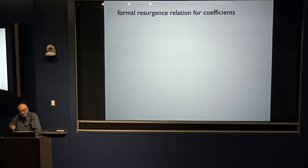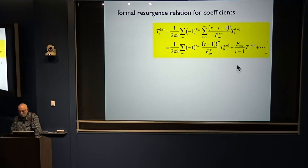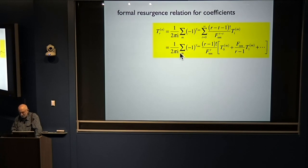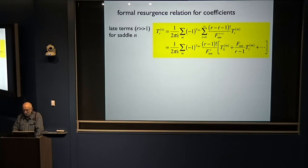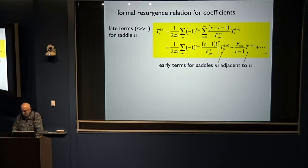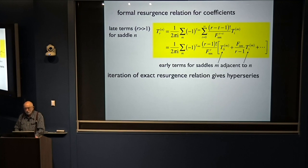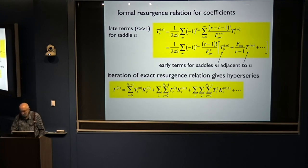If you expand that integral using steepest descent, you get this formal resurgence relation: the high-order terms contributions to the nth saddle integral is a sum over all adjacent saddles — factorial over a power — and then these corrections. That's a very general, beautiful relation. For the late terms of the series of the nth saddle, these involve the early terms of the adjacent saddles. If you iterate that, you get a hyperseries — that's the result of hyperasymptotics.